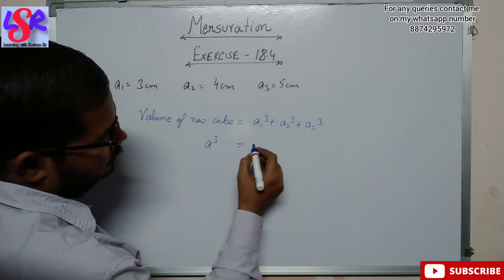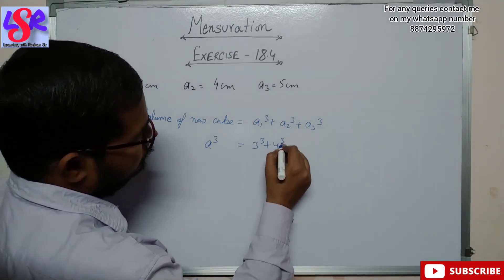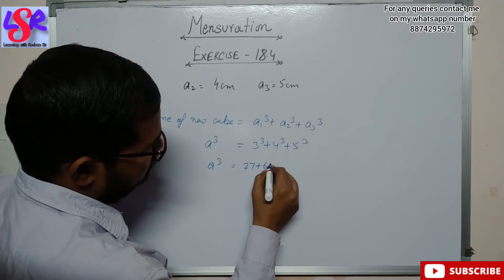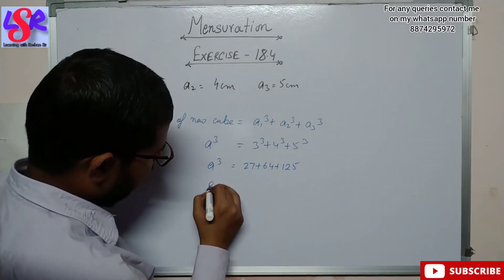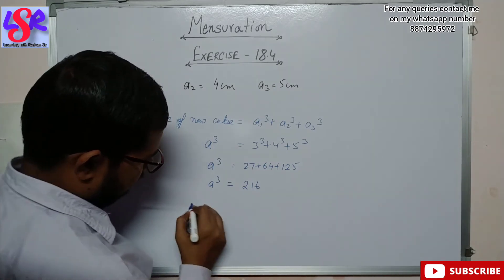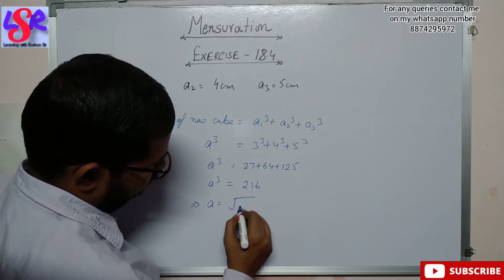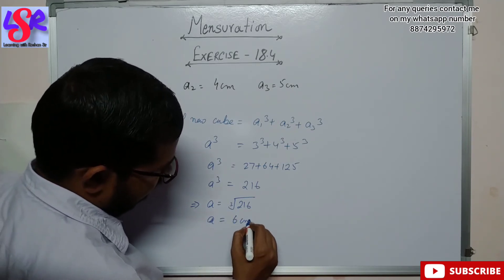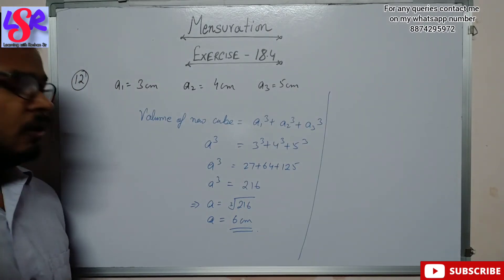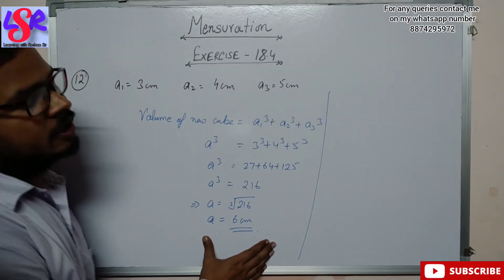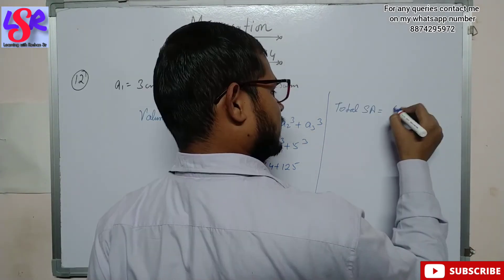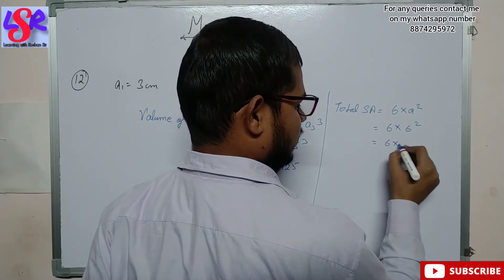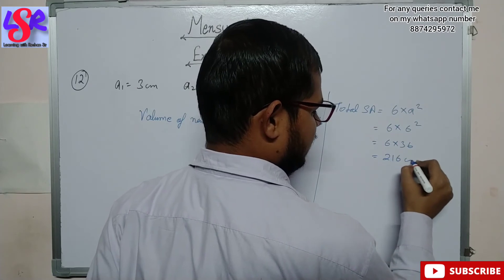The volume of the new cube equals a³ = 3³ + 4³ + 5³ = 27 + 64 + 125 = 216. Taking the cube root of 216 gives a = 6 centimeter. The total surface area of the new cube is 6 × a² = 6 × 36 = 216 square centimeter.